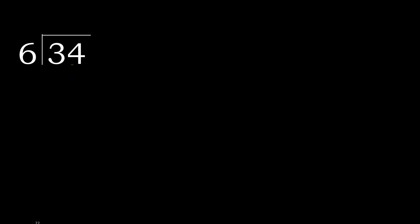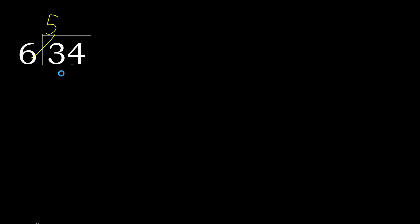34 divided by 6. 3 is less, therefore next: 34. 34 is not less, therefore with 34 — 6 multiplied by which number is nearest to 34 but not greater? 6 multiplied by 6 is 36, which is greater. 6 multiplied by 5 is 30. 34 minus 30 is 4.